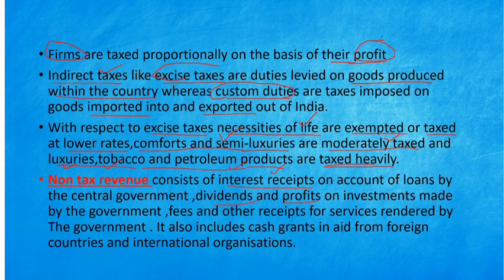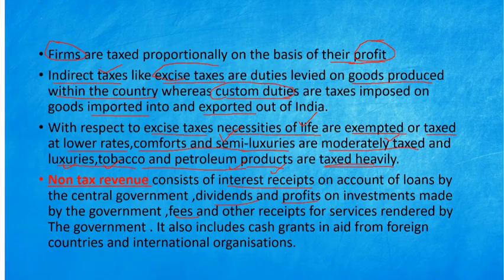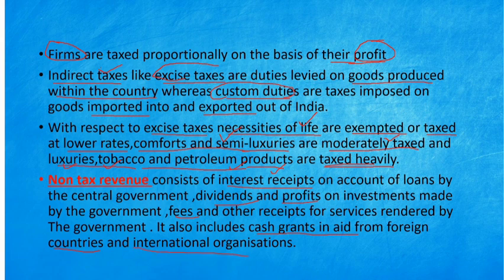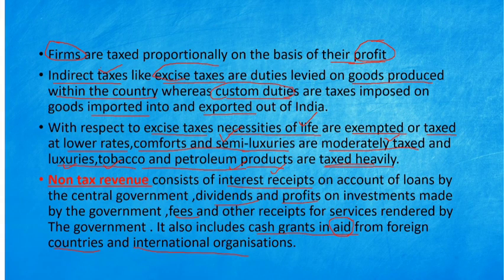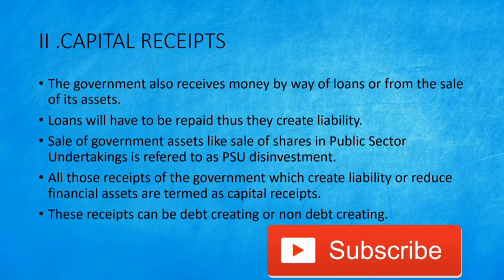Apart from that, fees and other receipts for services rendered by the government — for government services, there is a minimum amount we pay, such as application fees or processing fees of 20 or 30 rupees. That also comes under non-tax revenue. Additionally, there are certain cash grants in aid from foreign countries and international organizations like the IMF — International Monetary Fund. These organizations help countries during times of crisis, like during COVID, when foreign countries and organizations like the IMF provided cash grants.